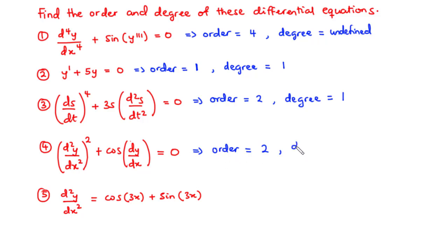For the degree of the fourth example, we have cosine of the derivative of the dependent variable. Hence, this differential equation is not a polynomial in its derivatives. Therefore, the degree of this differential equation is undefined.